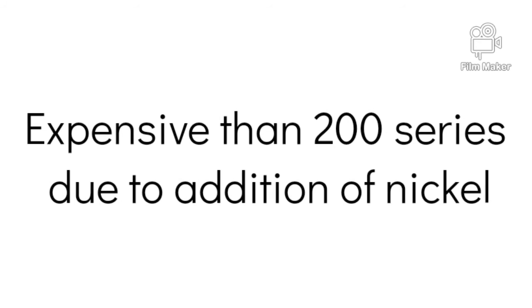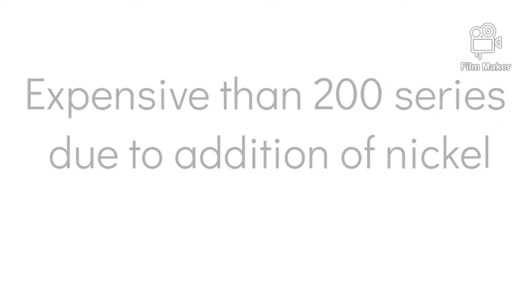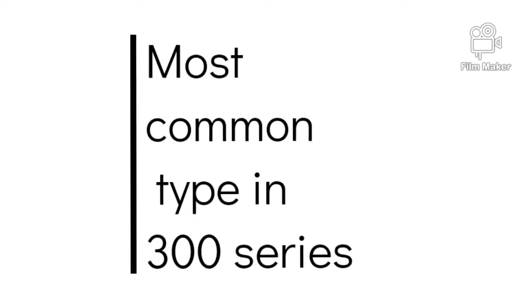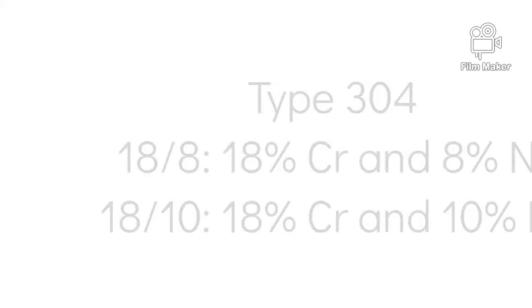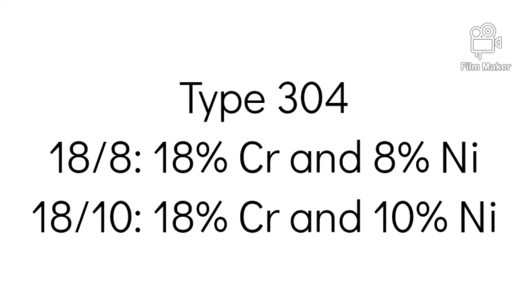The 300 series is the largest group and the most widely used. Due to the addition of nickel, these austenitic stainless steels are more expensive than 200 series. Some of the most common grades include Type 304, the best known grade, also known as 18-8 and 18-10 for its composition of 18% chromium and 8-10% nickel respectively.